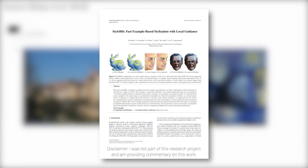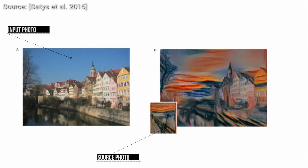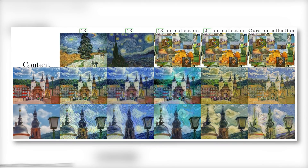Dear Fellow Scholars, this is Two Minute Papers with Károly Zsolnai-Fehér. Style transfer is an interesting problem in machine learning research where we have two input images, one for content and one for style, and the output is our content image reimagined with this new style. The cool part is that the content can be a photo straight from our camera, and the style can be a painting, which leads to super fun and really good-looking results. We have seen plenty of papers doing variations on style transfer, but can we push this concept further?